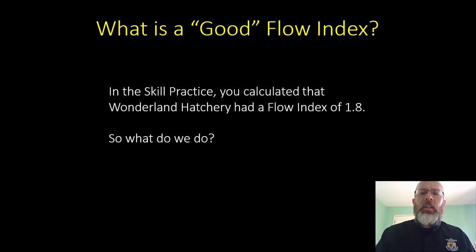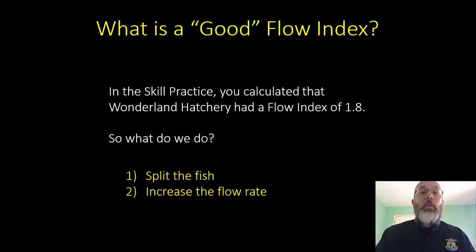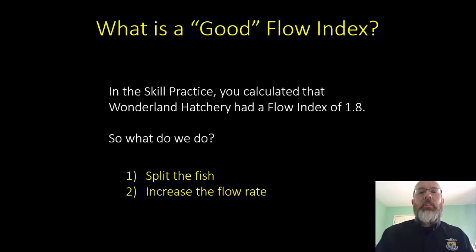In the skill practice, you calculated that the Wonderland Hatchery had a flow index of 1.8, which exceeds the maximum. In the case of density index, we split the fish so that we can give them more space. In this case, we have a couple of options: we could split the fish to reduce the weight in our equation, or we could increase the flow rate. If you decrease the weight by splitting, you decrease the flow index. But also if you increase the flow rate, you can decrease the flow index.